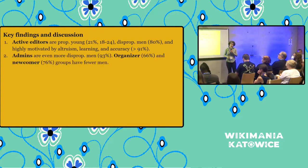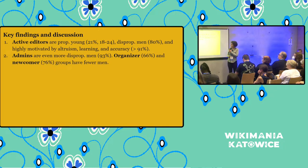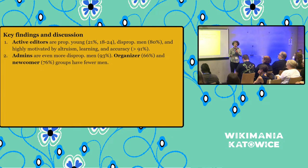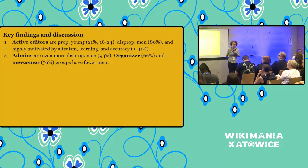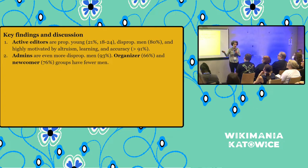Admins are even more disproportionately gendered — 93 percent of our admins report being men. Organizers are 66 percent women or other gender minorities. And our newcomers are 76 percent men — still significantly more than what we see later on the project. This is the notion of the pipeline of contribution. The idea is that the more steps we put in front of people, the more we start losing people, and it can disproportionately affect minorities — in this case, women.